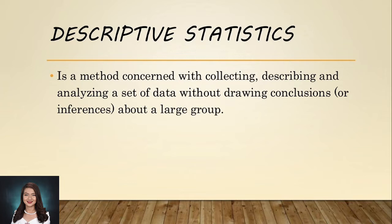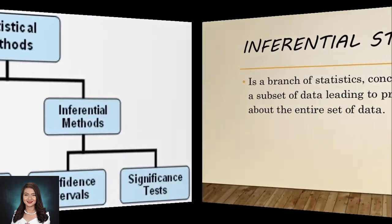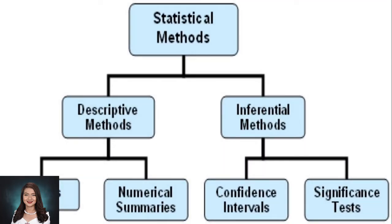Descriptive statistics is a method concerned with collecting, describing, and analyzing a set of data without drawing conclusions or inferences about a large group. While inferential statistics is a branch of statistics concerned with the analysis of a subset of data, leading to predictions or inferences about the entire set of data. Looking at this flowchart, for descriptive methods we use graphs and numerical summaries, while in inferential methods we use confidence intervals and significance tests.